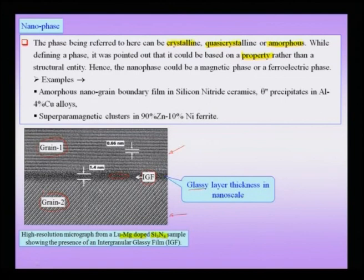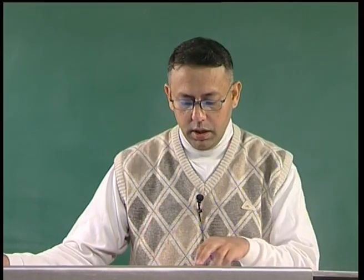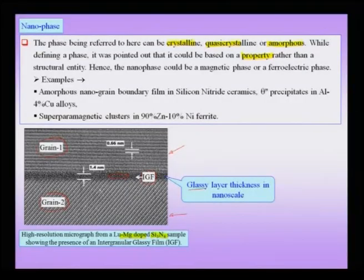The phase which is in between the grains, as we shall see later, will be called a one-dimensional nano material, or constrained in one dimension. Therefore, there are two bulk dimensions, and in an alternate classification you could call it a two-dimensional nano material. This intergranular film is about 1.4 nanometers thick.